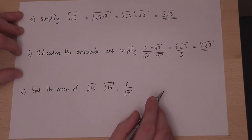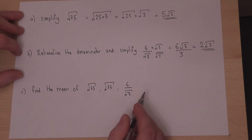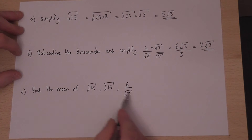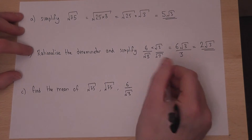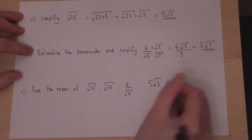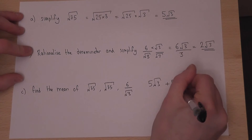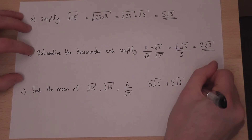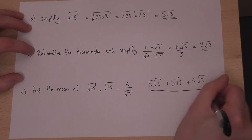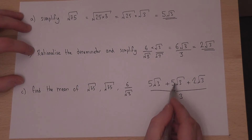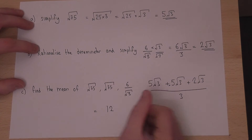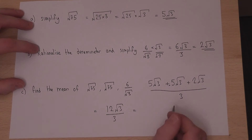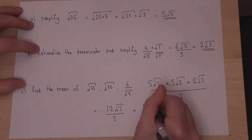In part C, we find the mean of three numbers by adding them and dividing by 3. We know root 75 is 5 root 3, there's another 5 root 3, and then 2 root 3. These are divided by 3. 5 plus 5 plus 2 is 12, so it equals 12 root 3 over 3, and 12 over 3 is 4, so the mean is 4 root 3.